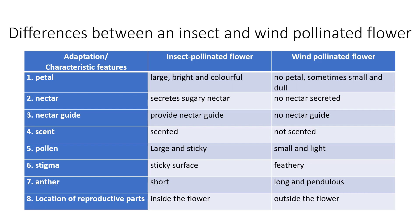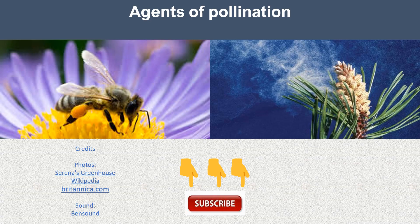These are the differences between an insect and a wind-pollinated flower. That is our topic for today — we have learned about the characteristic features of insect and wind-pollinated flowers. Click the subscribe button to learn more science and biology topics. This is Teacher Jeffrey: a goal without a plan is just a wish.